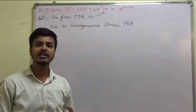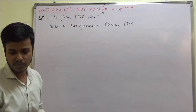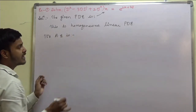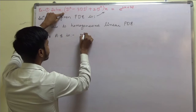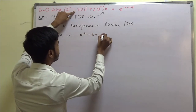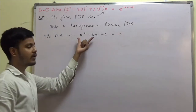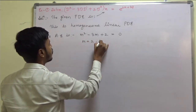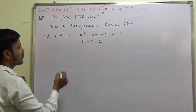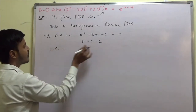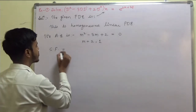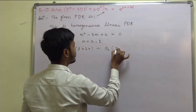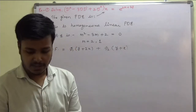We need to find the complementary function and particular integral and write the complete solution. The auxiliary equation is obtained by putting D' = m and setting f(1, m) = 0. The auxiliary equation factors give m = 2 and m = 1. On the basis of these roots, the complementary function is CF = φ₁(y + 2x) + φ₂(y + x). We have obtained the complementary function.